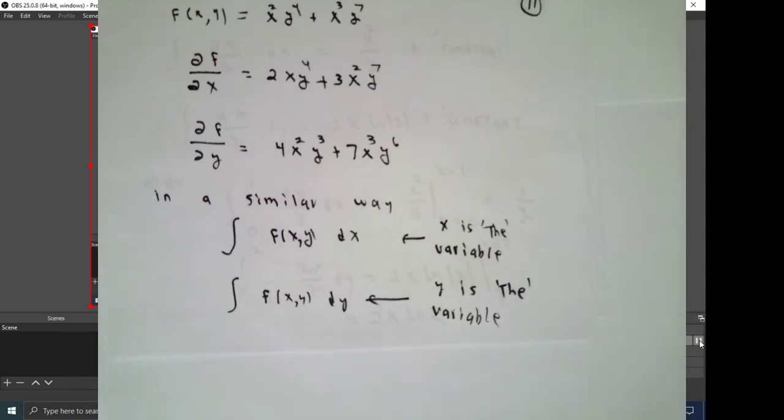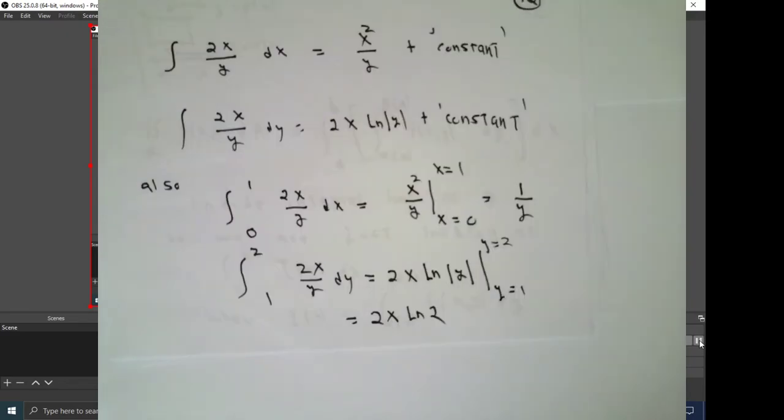We're going to do exactly the same sort of thing with integration. If I have one of these two types of things, in the first, I'll pretend that y is a constant and x is the variable, and in the second one, it'll be the other way around. As a simple example of this, let's think of the integral of 2x over y integrated with respect to x.